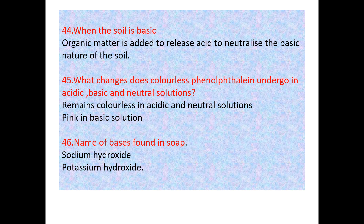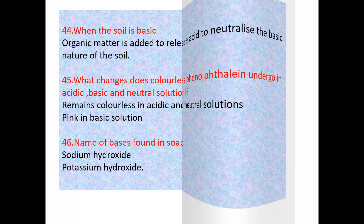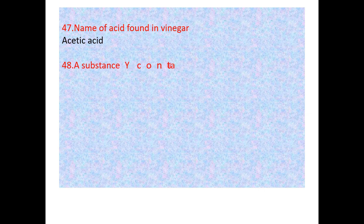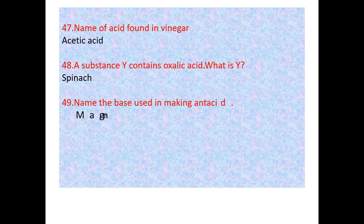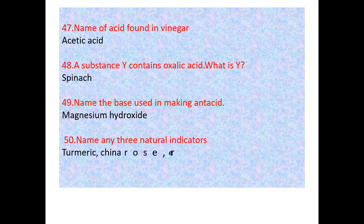Name the bases found in soap — sodium hydroxide and potassium hydroxide. Name the acid found in vinegar — acetic acid. A white substance that contains salicylic acid is spinach. Name the base used in making antacid — that's magnesium hydroxide. Name any three natural indicators — turmeric, china rose, red cabbage, etc.